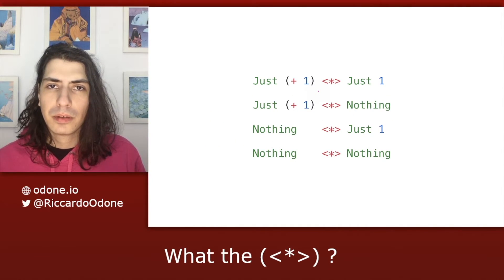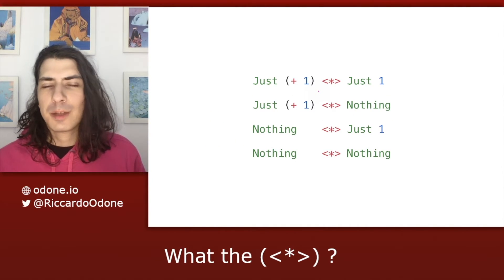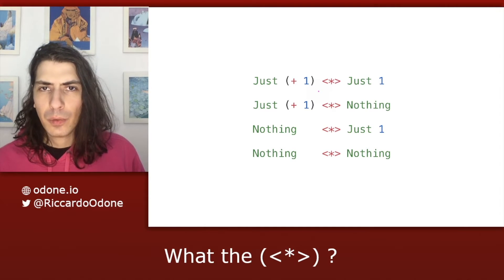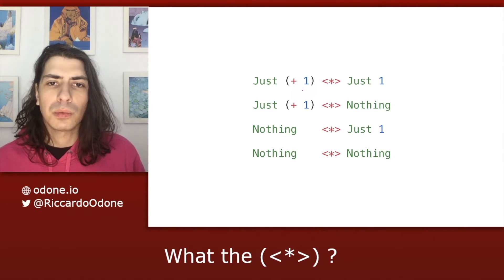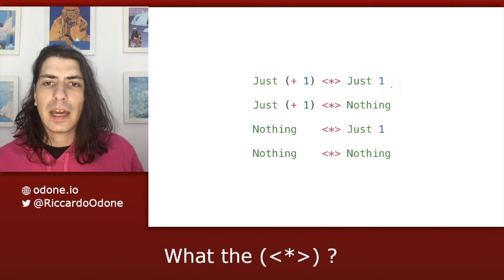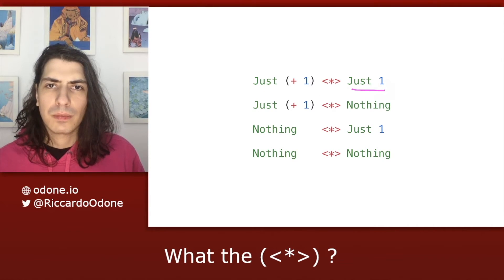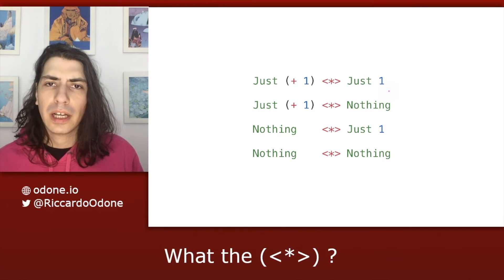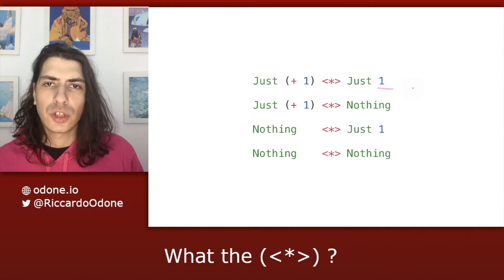Here's an example using maybe. So since maybe has two value constructors just and nothing, and we have two discriminators, we can expect to have four combinations. So in the first case, we have a function plus one wrapped up in a just and a value one wrapped up in a just. The semantics of maybe for applicative functor say that in this case, we go on and we apply plus one to the value one, and we return just two.